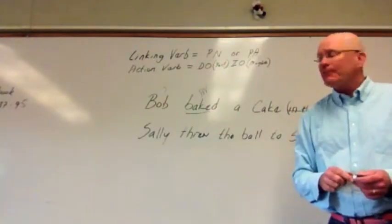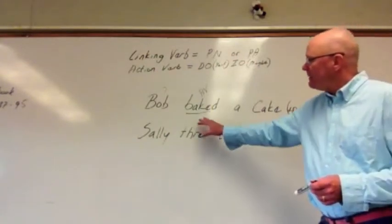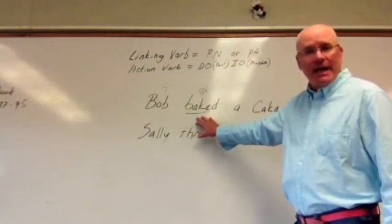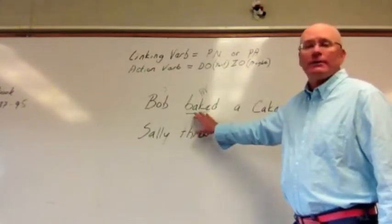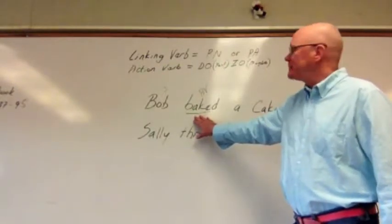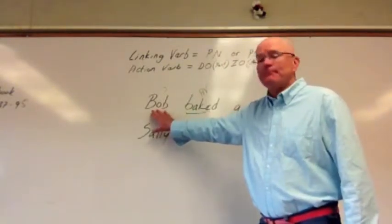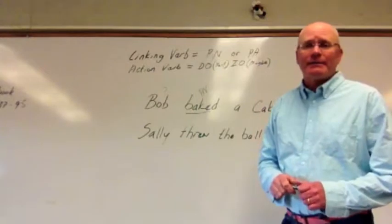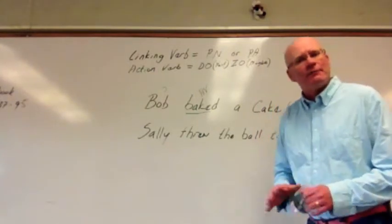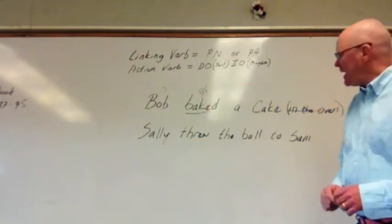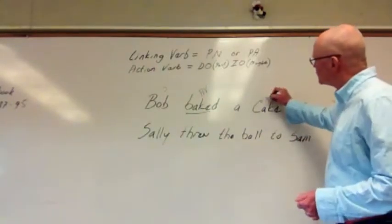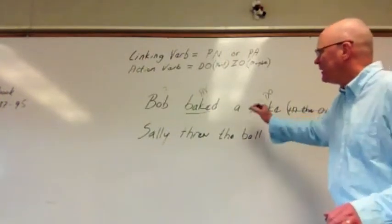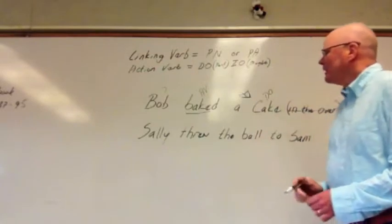The next thing we want to do is determine the verb in the sentence. Baked is the verb, and we ask ourselves: is baked an action verb or a linking verb? Baked is an action verb. Then we look left 95% of the time to find our subject. We look left of baked and find Bob — Bob is our subject. Bob baked is our basic sentence. Then we ask: what did Bob bake? Bob baked a cake, which makes cake a direct object because it directly received the action of being baked.